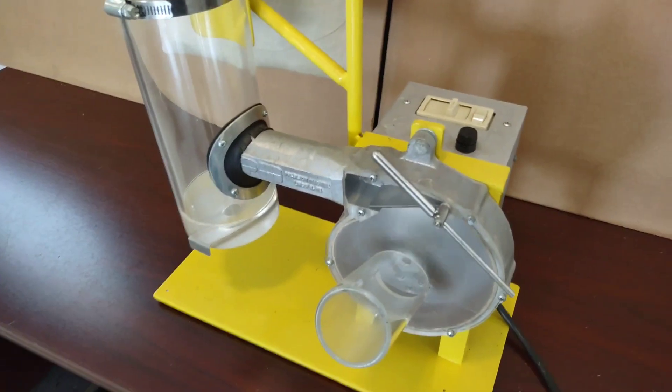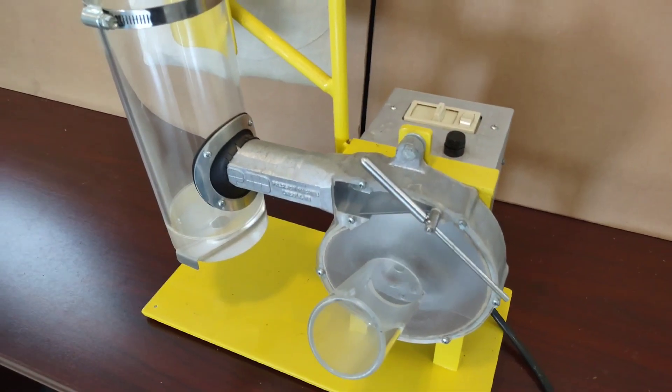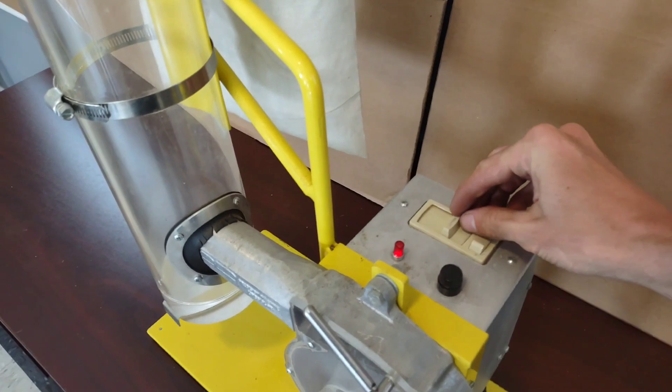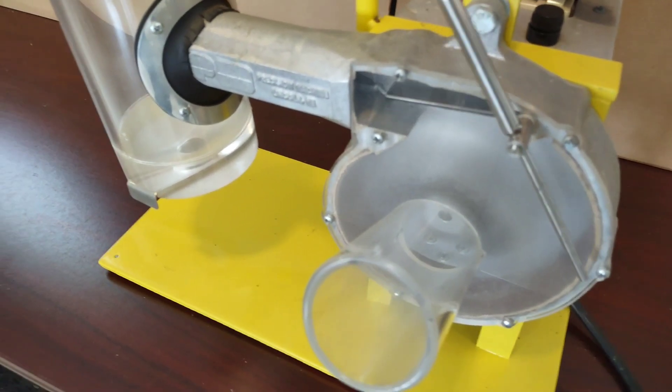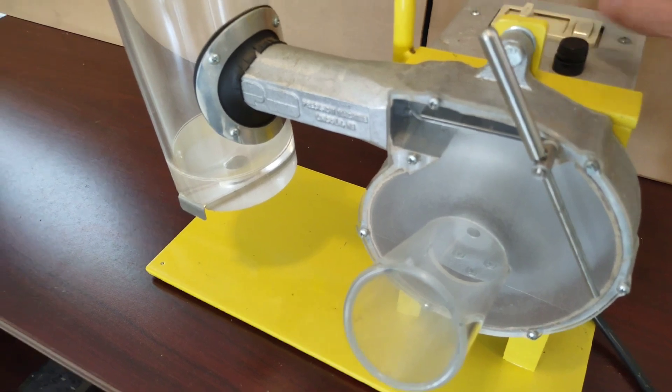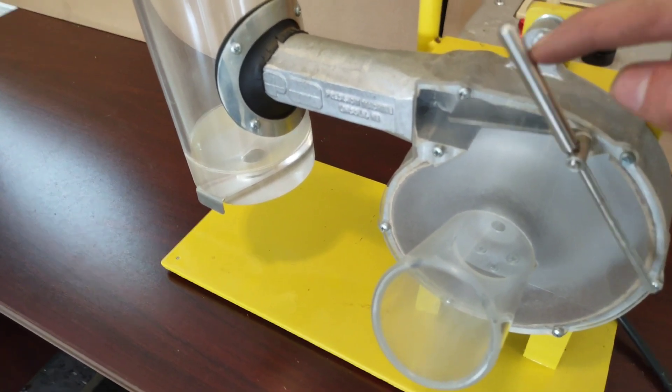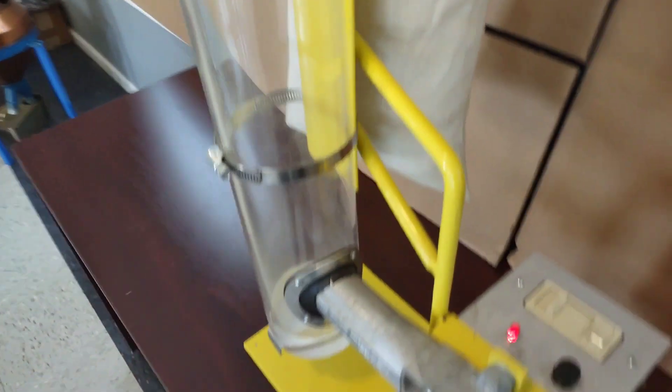Right now it's turned down really low. We'll use the rheostat knob to increase the speed. You can see it's picking up, it's actually blown the door open, and the bag has filled with air, so that's good.